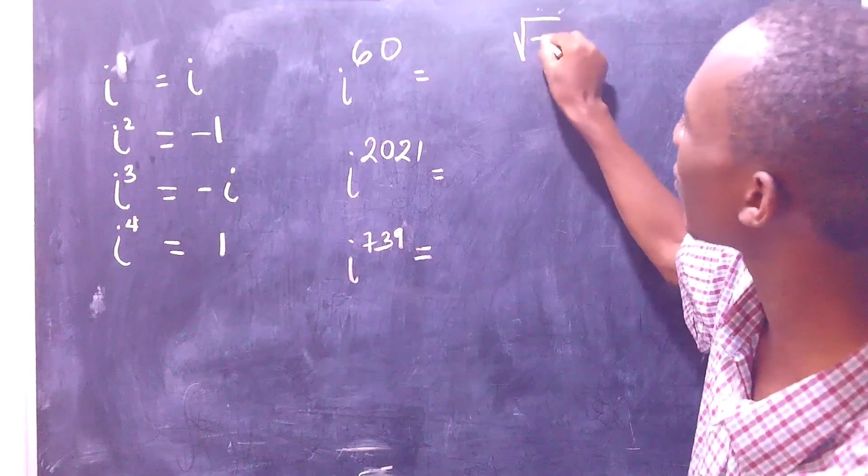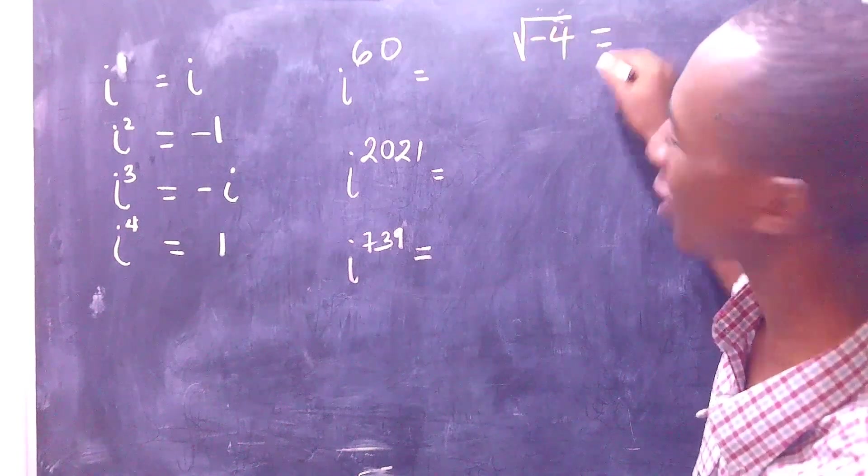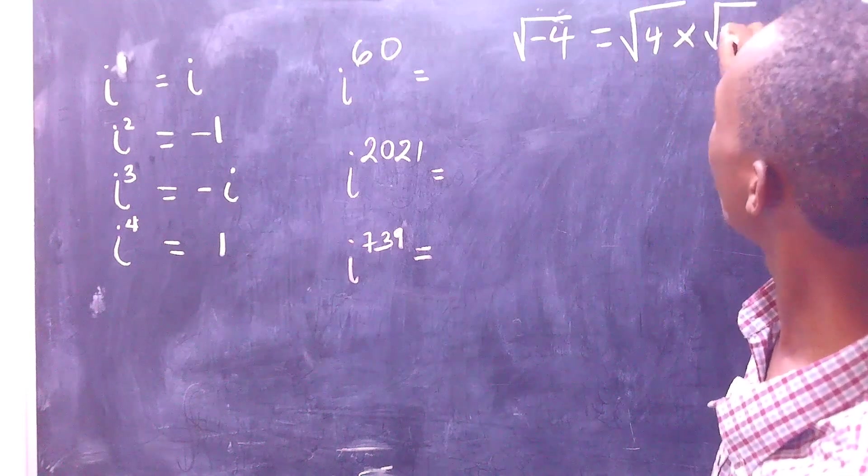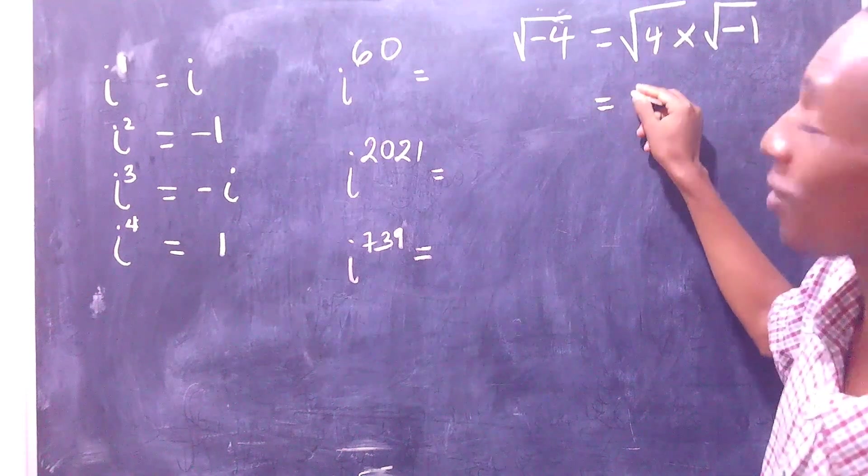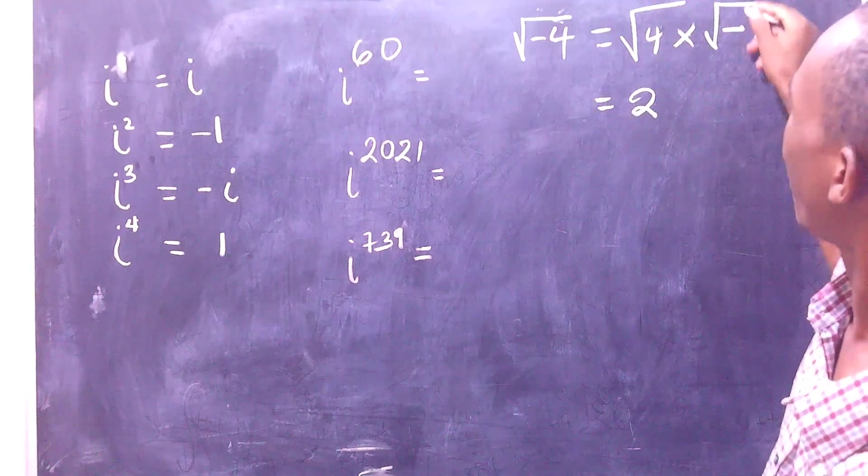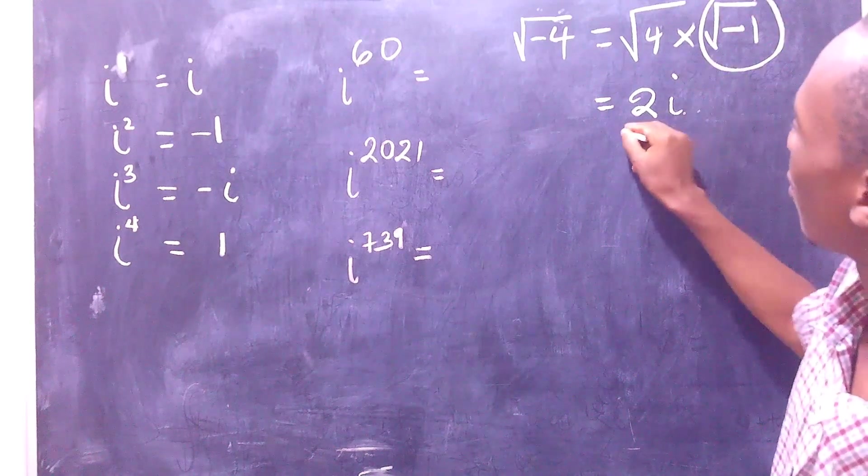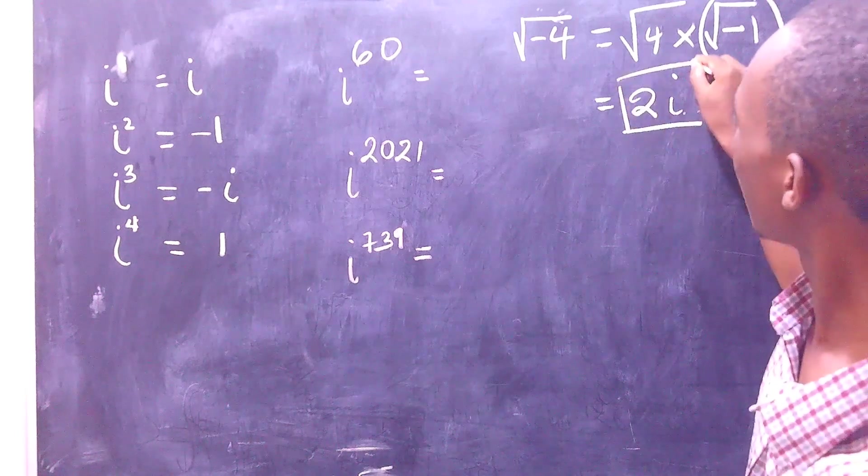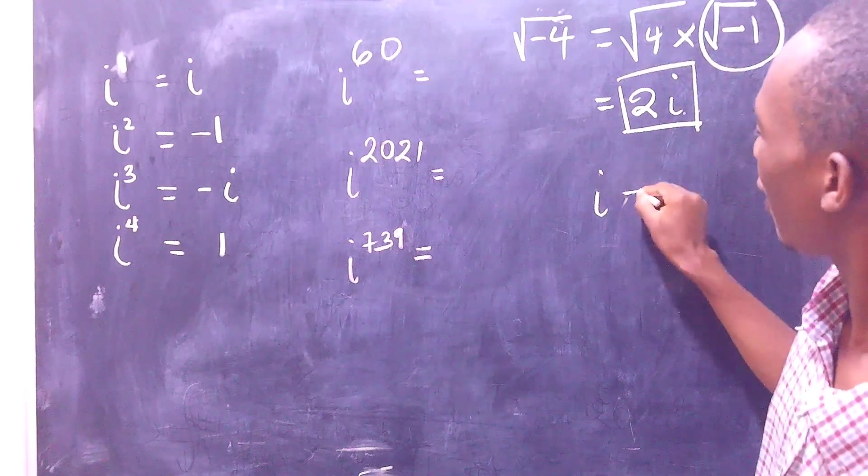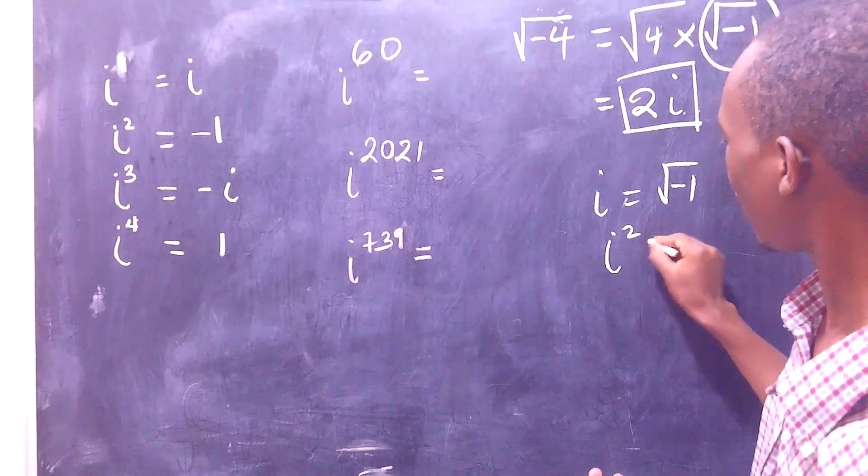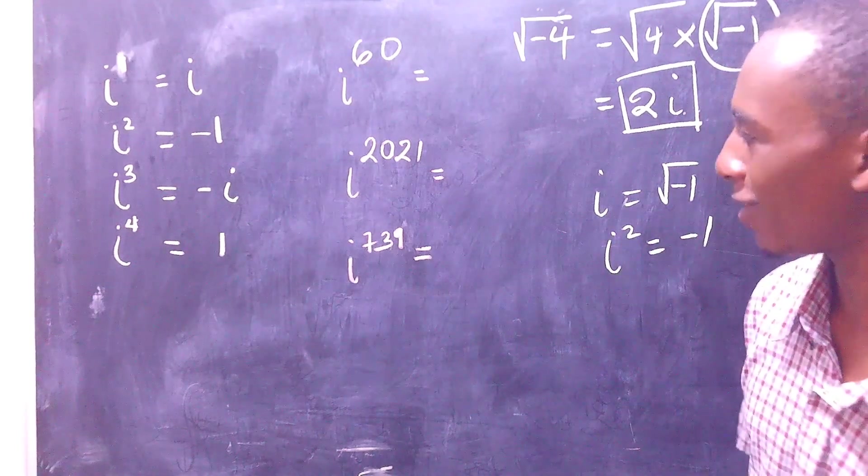Say if we want to calculate the square root of negative 4, we can just split this up into the square root of 4 times the square root of negative 1. The square root of 4 is 2, and by definition the square root of negative 1 is i, and that's what we call the imaginary unit. So by definition, i is square root of negative 1, or i squared is negative 1.